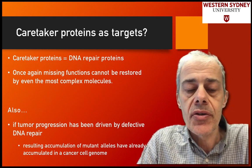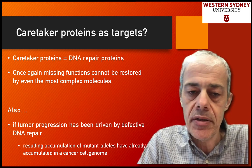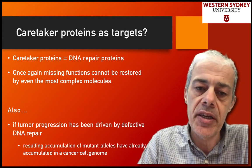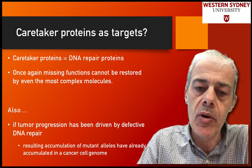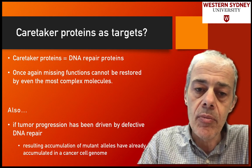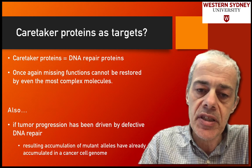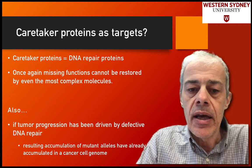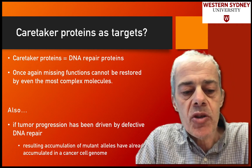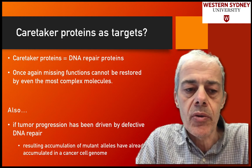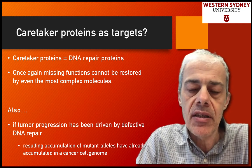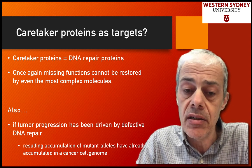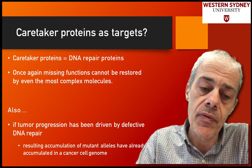Once you've lost these repair proteins in a cancer cell, you're no longer repairing your genomic DNA. As the cell grows and divides, the genome is not being repaired, so mistakes are being replicated and further mistakes are not repaired. It's almost impossible to conceive how a small molecule would replace that function and start to instigate DNA repair. So caretaker proteins don't make good targets for rational drug design.